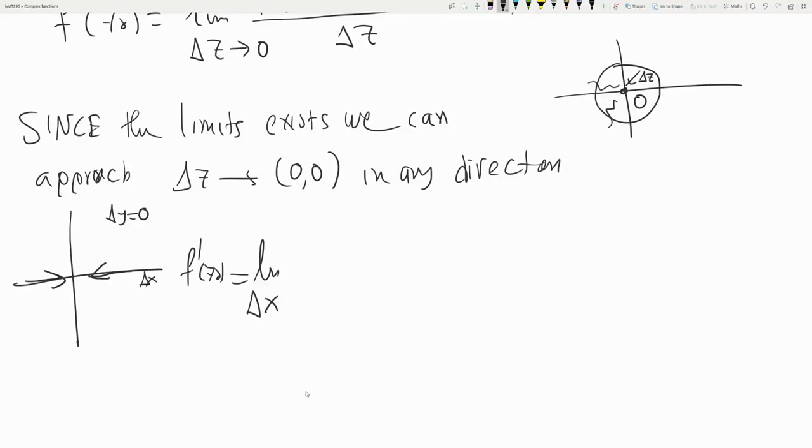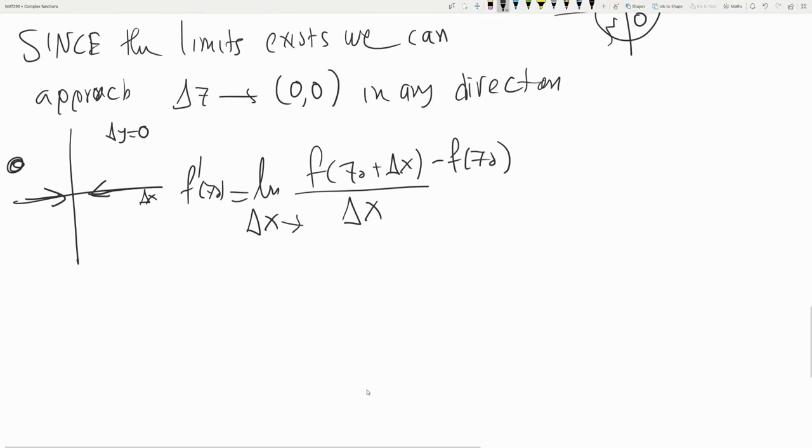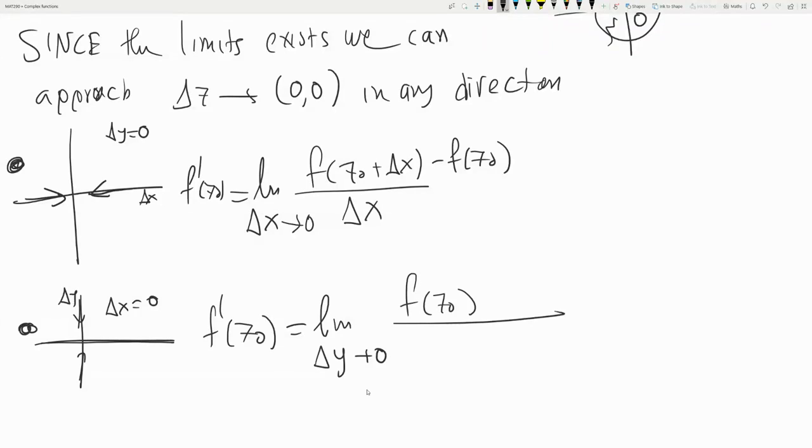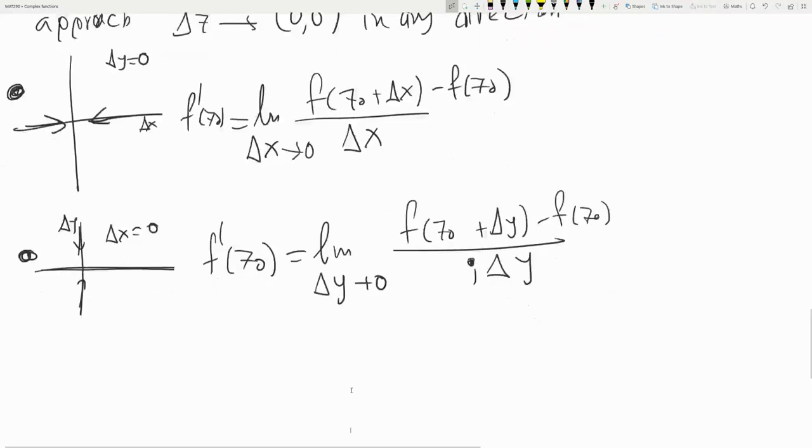So f'(z0) equals the limit as delta x goes to zero of f(z0 + delta x). And the second case is we go along delta y and set the x direction to be zero. So again, we get f'(z0) as delta y goes to zero to be this. And there's an i, right? Because delta z is i delta y.